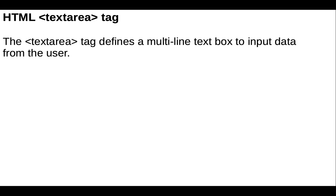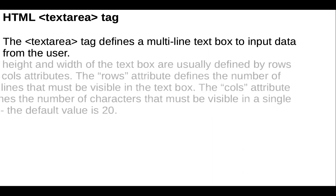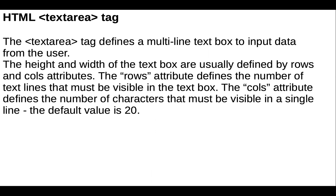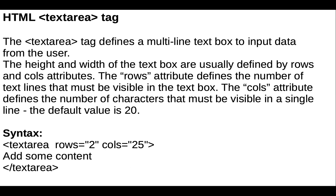The textarea tag defines a multi-line text box to input data from the user. To change the height and width of the textarea box we can use two attributes: rows and cols. The cols attribute defines the number of characters visible in a single line — the default value is 20. The rows attribute defines the number of text lines visible in the text box. The syntax is: open the textarea tag, add the rows and cols attributes with values, add some content, and close the textarea tag.